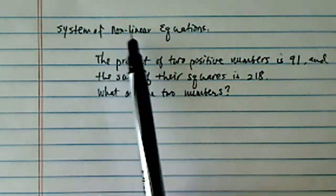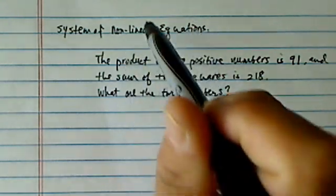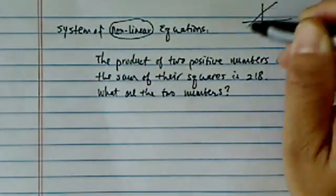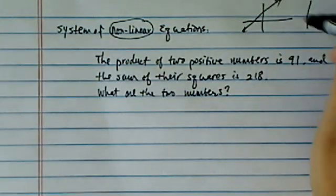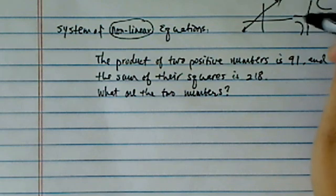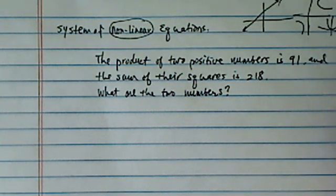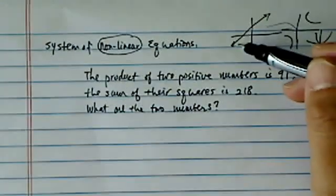Thank you for watching this clip on system of nonlinear equations. Nonlinear equation basically is a fancy word to say equation does not produce a line. Instead it might produce a curve this way or parabolas, something that's not a linear curve.